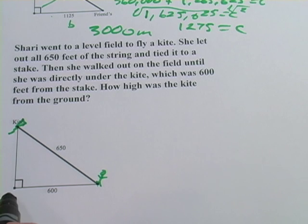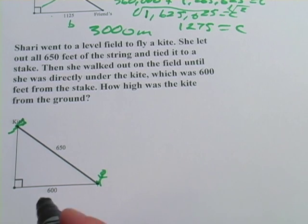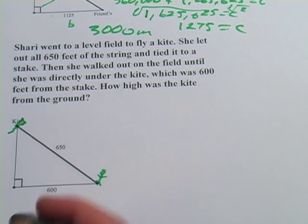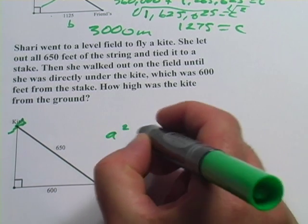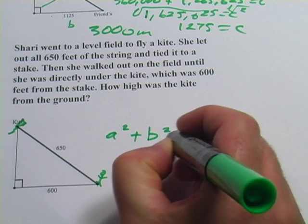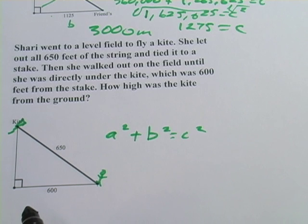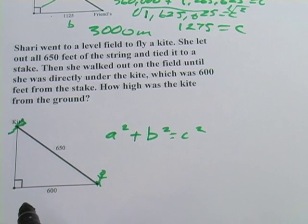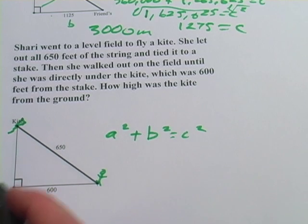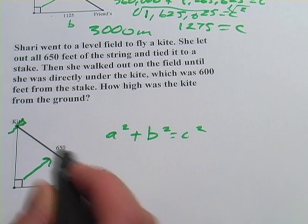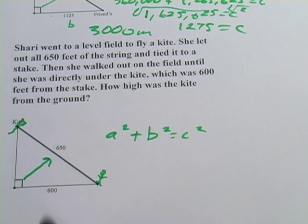We have a right triangle, and so we can use the Pythagorean theorem here. So let's go ahead and write our theorem, a squared plus b squared equals c squared. And now we have to determine which sides we have and which sides we don't have. I would always recommend deciding which side is c first, and that's the longest side, and it's the hypotenuse, and it's the one that's opposite the right angle. So 650 is c.